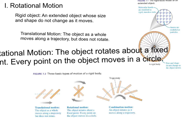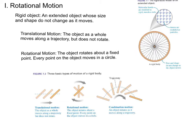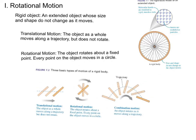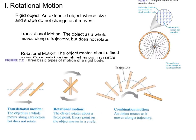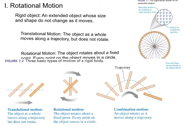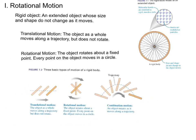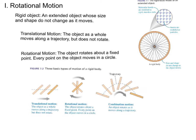Rotational motion is when an object rotates around a fixed point and every point on the object moves in a circle. Many motions are combinations of translational and rotational, such as an object flying through the air as it rotates.